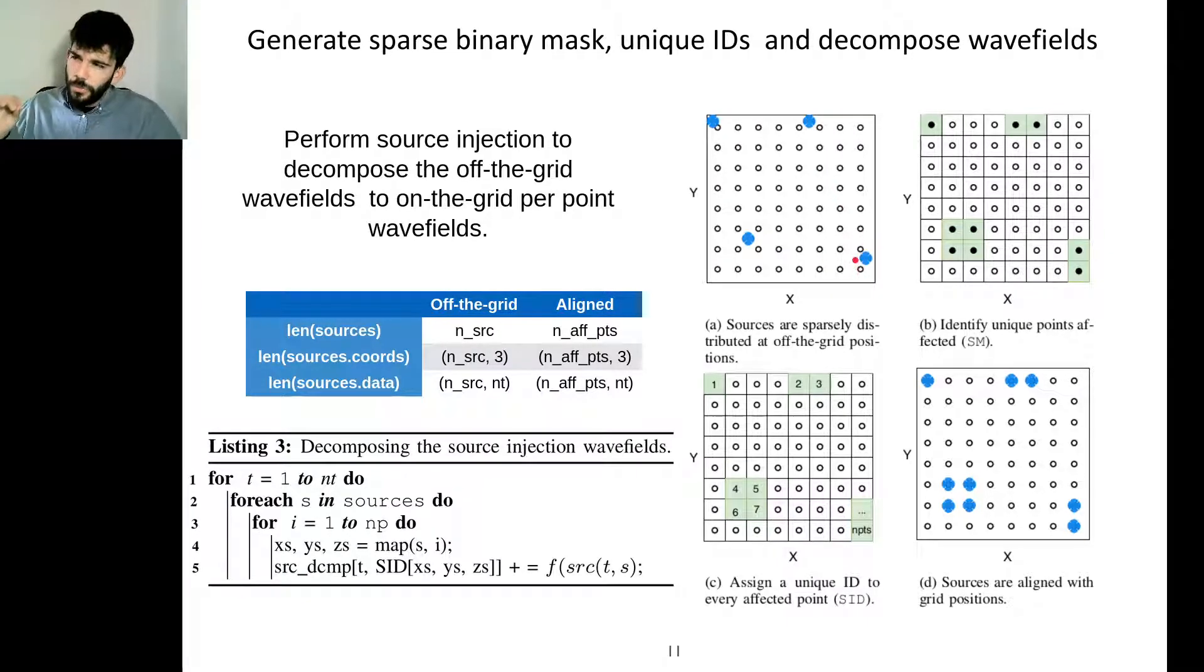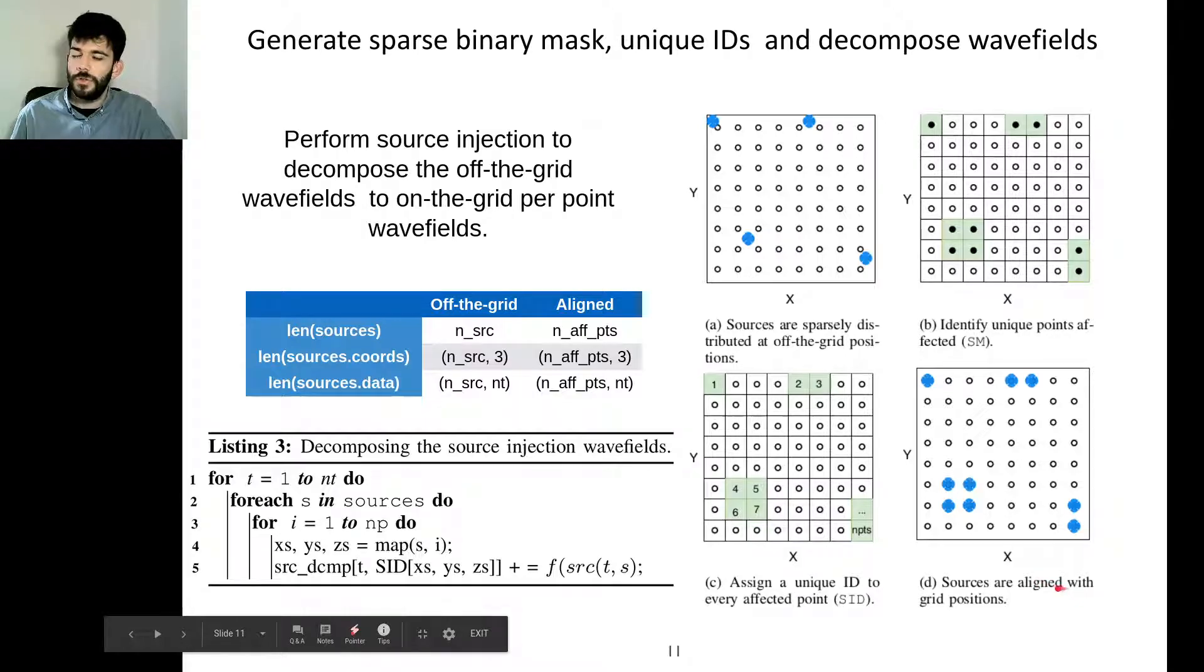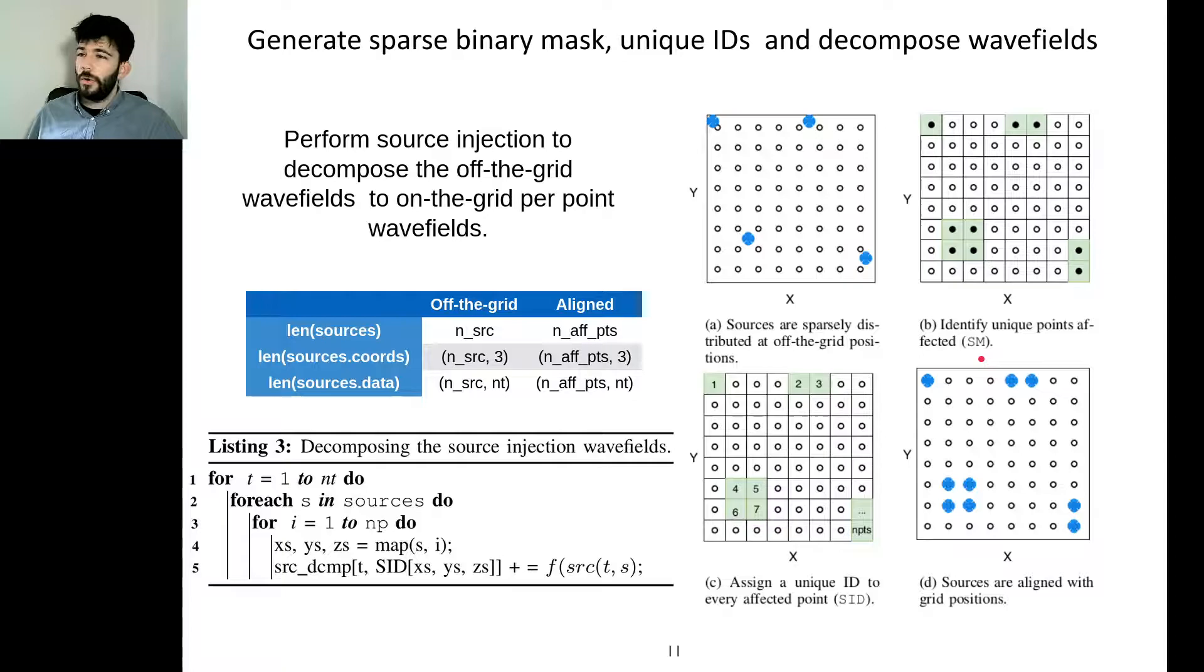These points have been affected from source injection. What we do is create a new source structure that is aligned to the point. We decompose the wave amplitude to sources aligned with the grid position. For this specific purpose we create two structures: a source mask which is a binary mask with zero or one depending on whether a point has been affected from a source, and the source IDs which holds a unique ID for each point that has been affected. These affected points will now be the same number of sources of our new structure. So we decompose our initial sources and in the end we have a new number of sources equal to the number of points that have been affected.